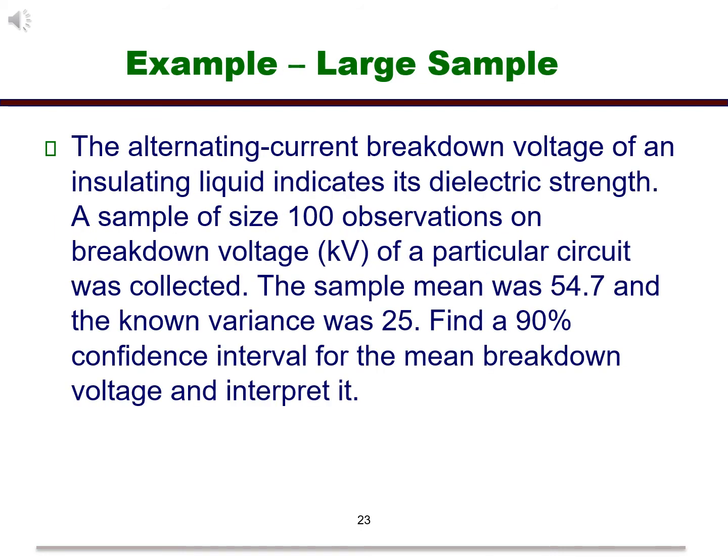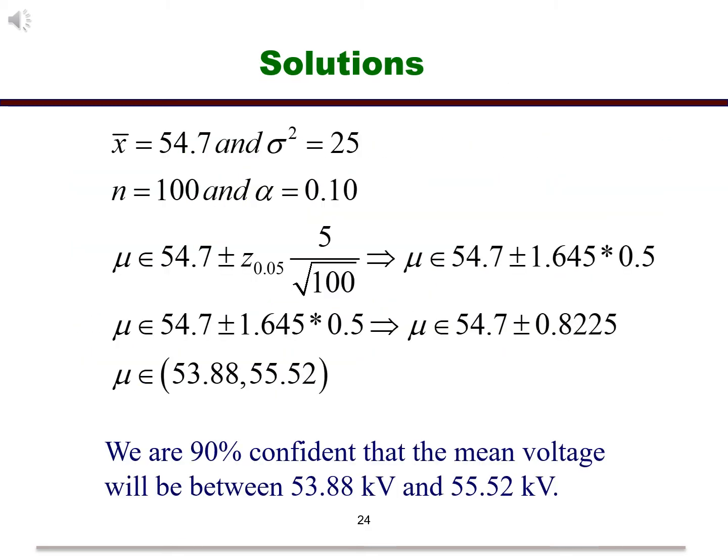Here is an example for a large sample confidence interval. Let's find the 90% confidence interval for the breakdown voltage and interpret it. Notice that the example gave us the sample mean and variance. Also, n is equal to 100, so the large sample approximation holds. We can plug into the formula and we come out with the interval given. Notice the interpretation contains the confidence level and the values for the bounds.